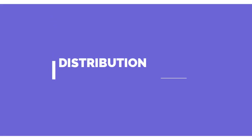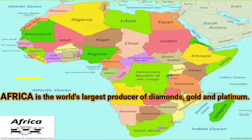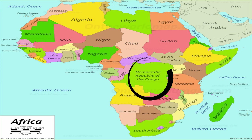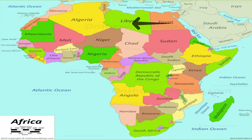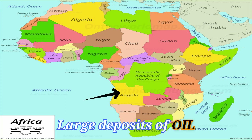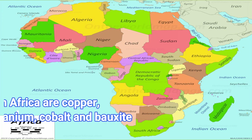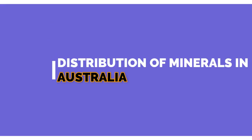Now let us know about the distribution of minerals in Africa. Africa is the world's largest producer of diamonds, gold, and platinum. South Africa, Zimbabwe, and Zaire have large deposits of gold. Nigeria, Libya, and Angola have large deposits of oil. Other minerals found in Africa include copper, iron ore, chromium, uranium, cobalt, and bauxite.